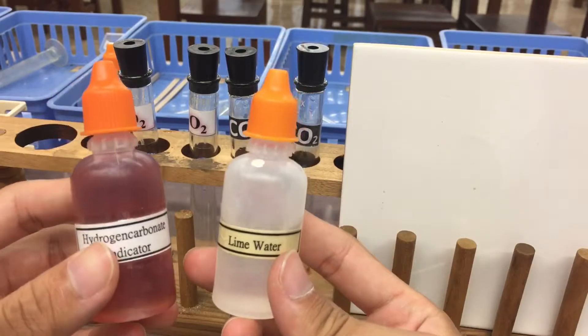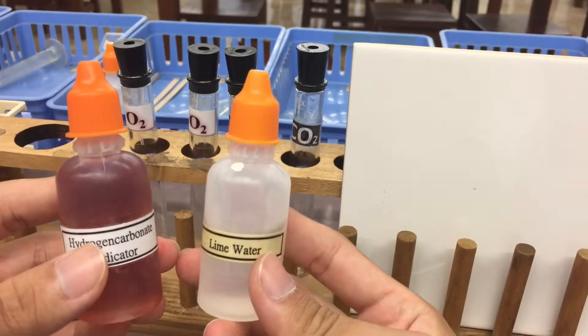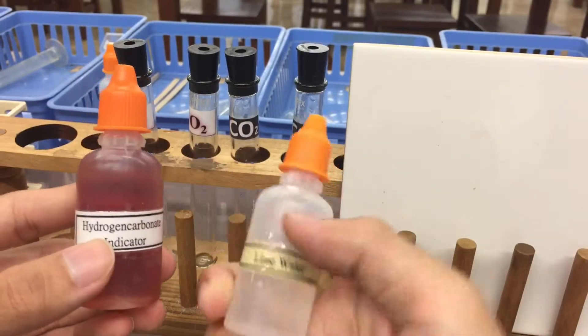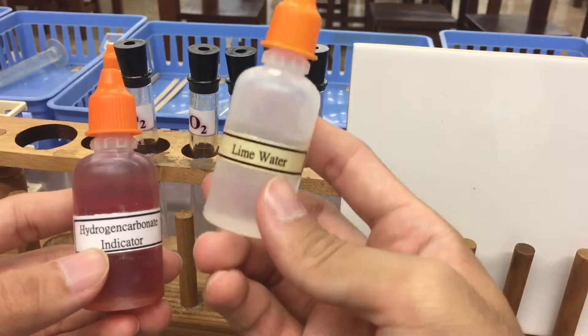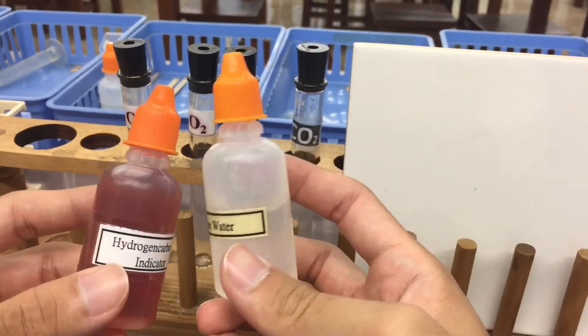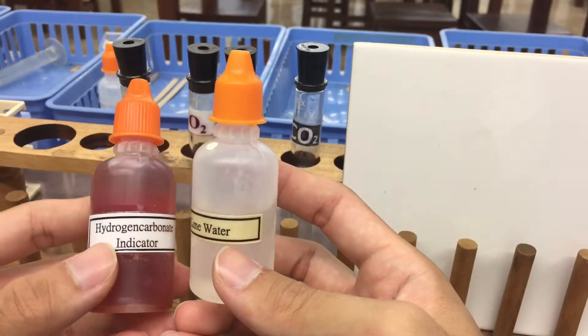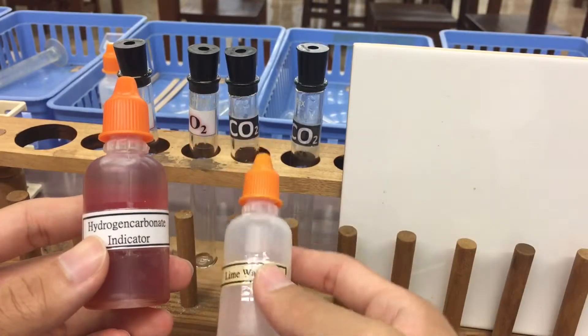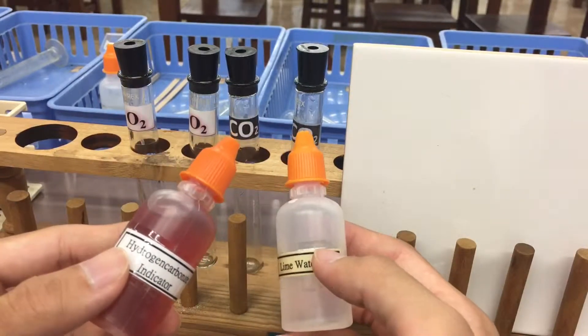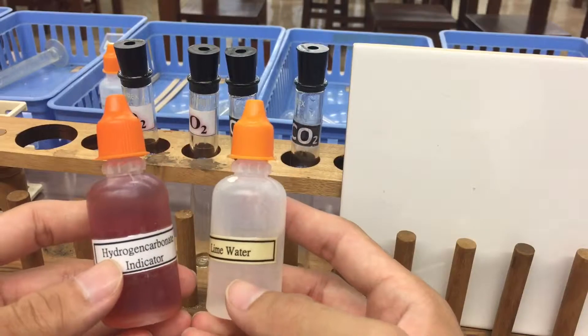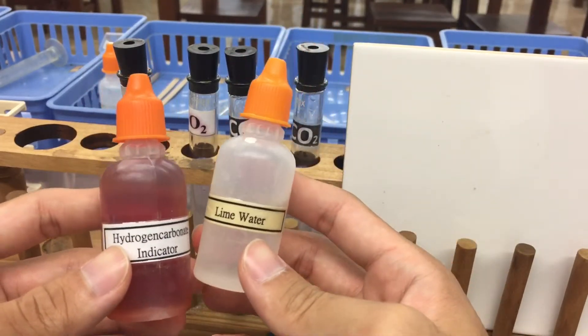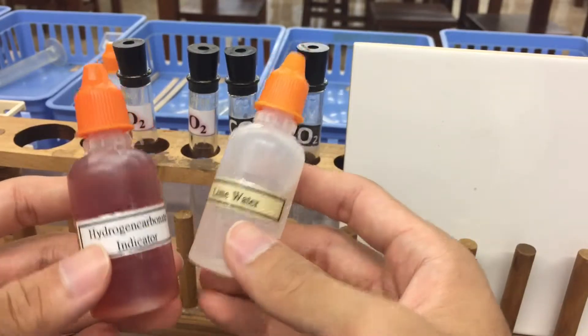We use these two to distinguish, to identify carbon dioxide. When I drop this kind of chemical into the carbon dioxide, there is a chemical reaction which may change the color of the indicator. This is the kind of method.